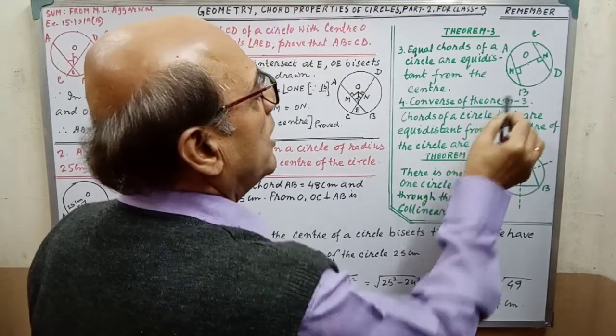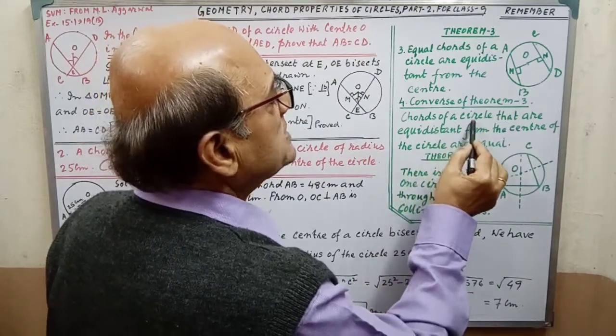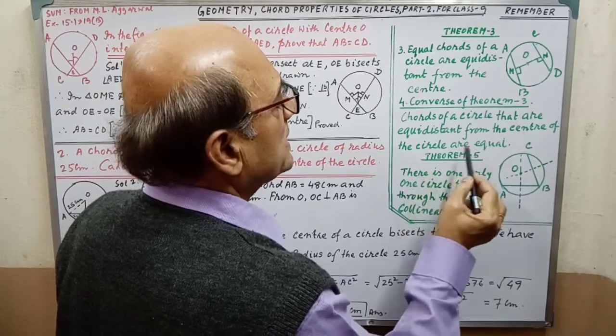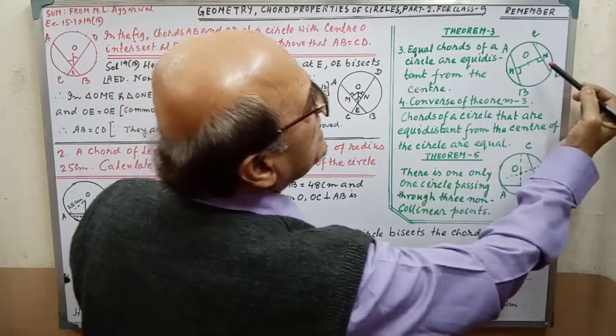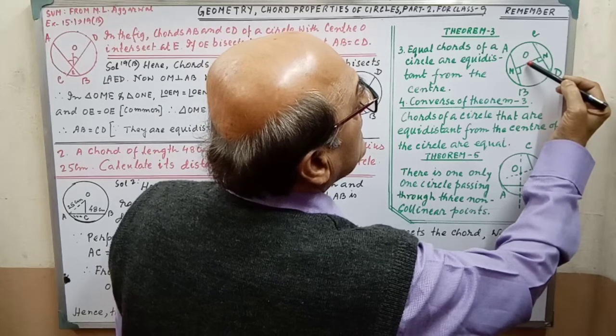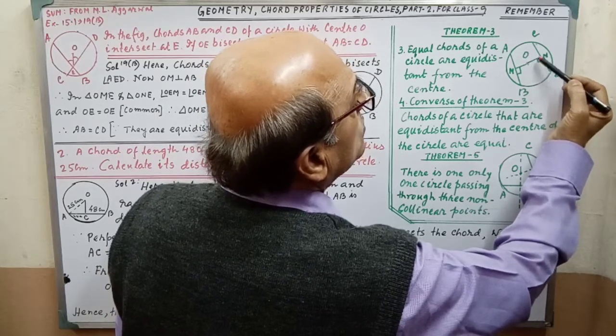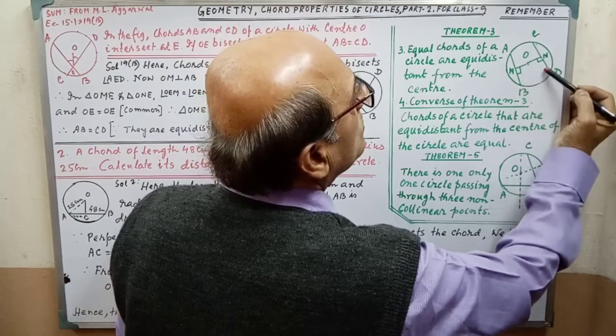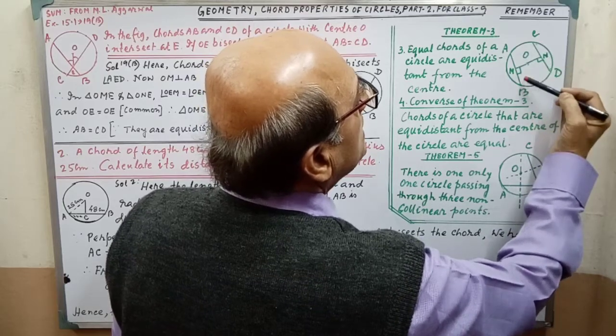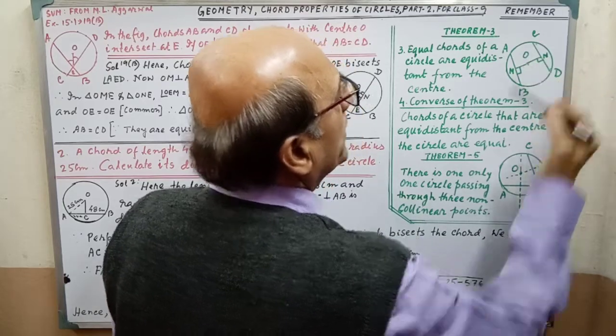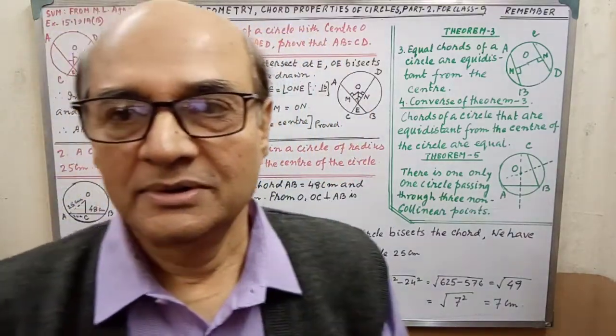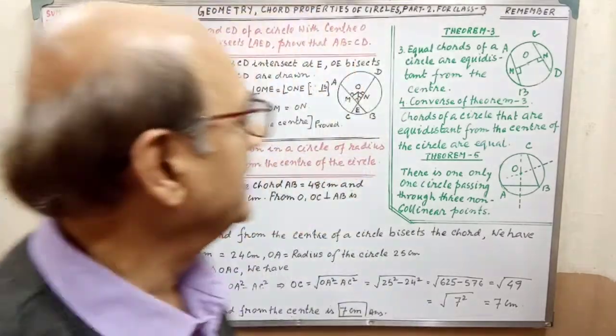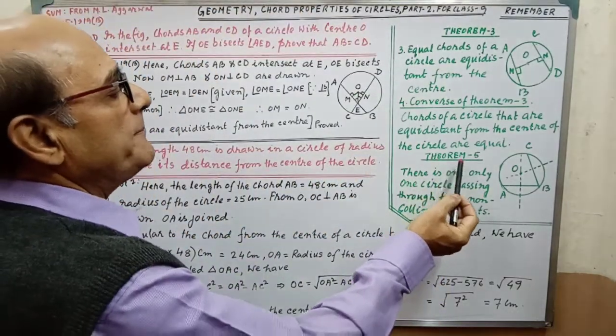Next, converse theorem of three: chords of a circle that are equidistant from the center of the circle are equal. That means same diagram, when distances are equal, that is OM equal to ON, then chords are equal. When chords are equal, then OM equal to ON. These are the two theorems you have to remember.